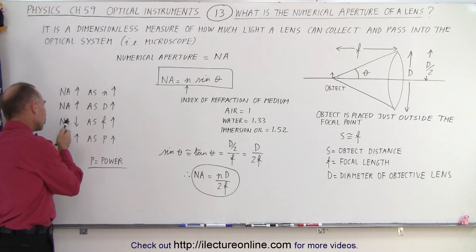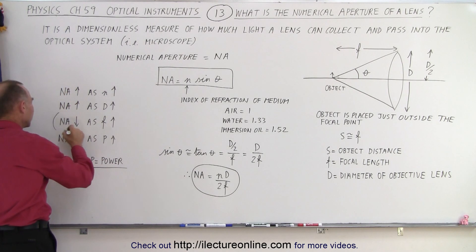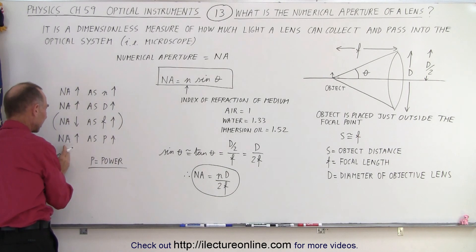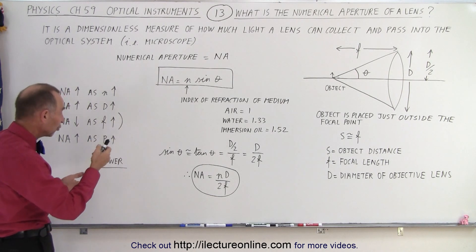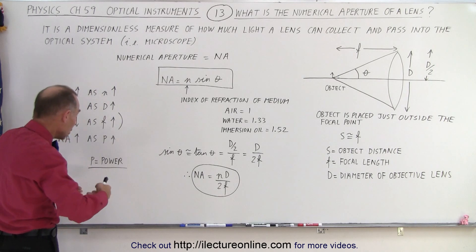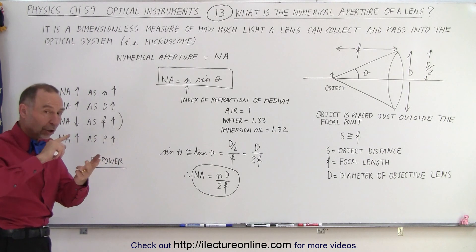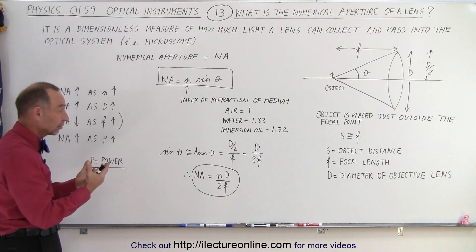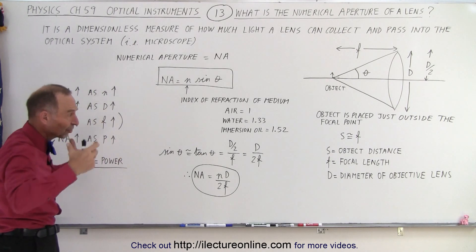Notice that the numerical aperture decreases as the focal length increases. But actually that's not as important if you think about it. I'm going to put some parentheses around that because essentially, notice that the numerical aperture increases as the power of the lens increases. Now the power by definition is one over the focal length. So when you have a higher power lens, you increase the numerical aperture as well. So you want a high power lens, you want a large diameter lens, and you want an index of refraction greater than that for air in order to let in as much light as possible.